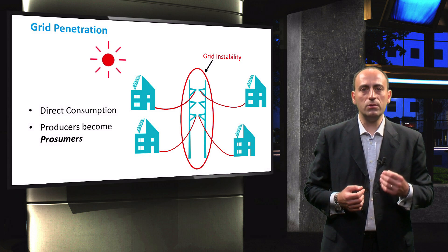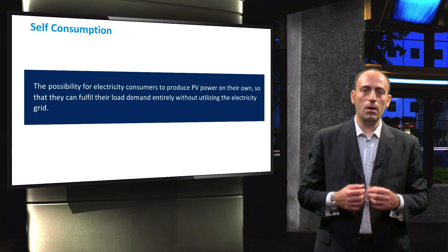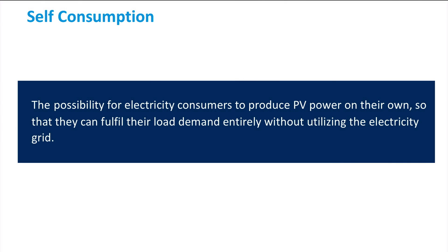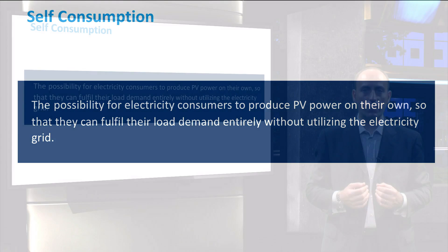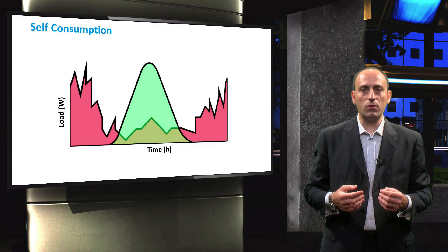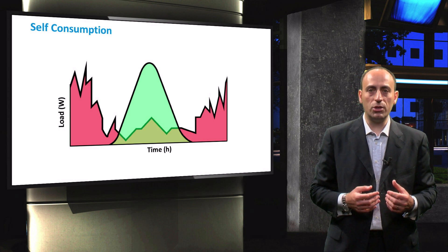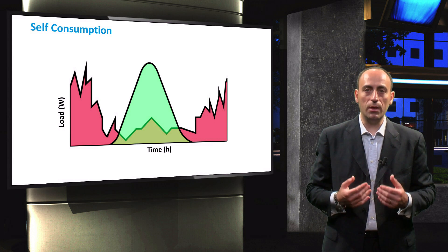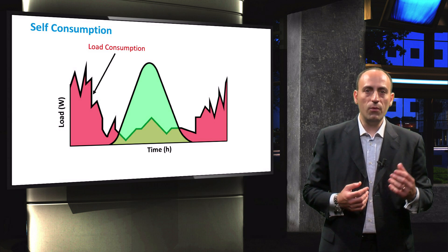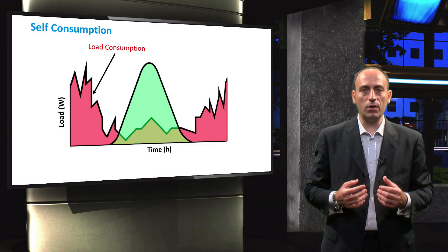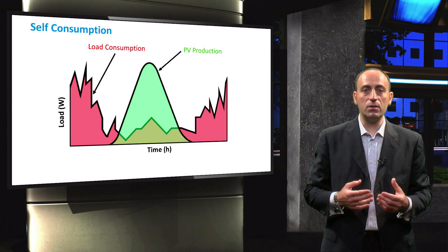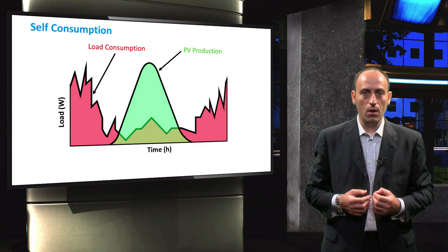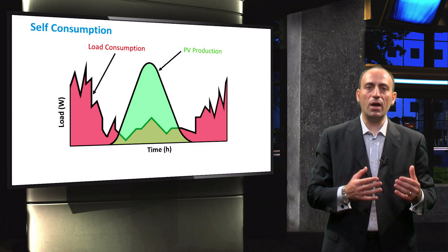This phenomenon is known as self-consumption. Self-consumption is defined as the possibility for the electricity consumer to produce PV power on their own, so that they can fulfill their load demand entirely without utilizing the electricity grid. The major challenge for self-consumption is the disparity between the PV power generation and the actual load demand. This figure shows how an average household with a PV system interacts with the grid. The red region indicates the total load consumption of the household and the green region indicates the total PV production during the day. We can clearly see the imbalance between the production and consumption.